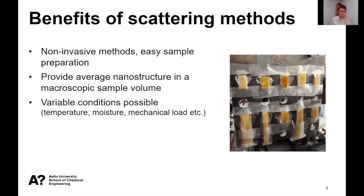The scattering methods have some great benefits. First of all, they are non-invasive — you can literally take a sample from the wood from the forest, cut it to a smaller piece, put it into the beam, and get decent data from that. These methods provide the average of the nanoscale structure in the whole sample or the whole path of the beam, which is an asset in the sense that one gets a reliable average structure rather than a small detail.